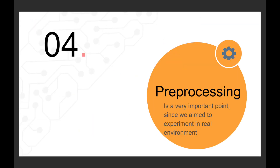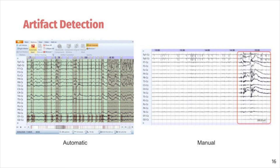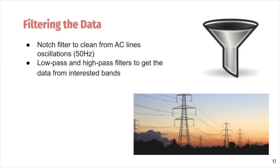Then I performed pre-processing steps. This is a very important point for EEG data, since the experiment was carried out in real conditions, which means it was subject to noise. First, I chose the right channels — the choice of electrodes whose data will be processed — which is always a trade-off between quantity and quality of data. The central electrodes were chosen because they are the most accurate, fitting more tightly and capturing the most interesting parts of the brain. Then I tried to eliminate all interference and corrupted parts of the recordings — a stage called artifact detection — done both automatically with EEG Studio and manually where I saw sharp and unreal fluctuations. Then I filtered the data using a notch filter to clean from AC lines, and low-pass and high-pass filters to get data from the frequency bands of interest.